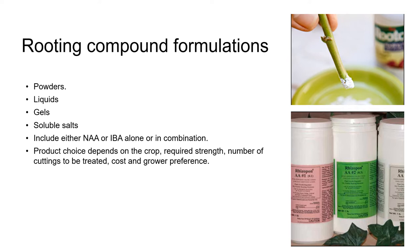In propagation, we have several choices of rooting compound formulation. There are powders, alcohol-based liquids, gels, and soluble salts that are dissolved in water. Depending on the brand, these rooting compounds include either NAA or IBA alone, or both of them in combination. The rooting compound we choose depends on the crop, the required auxin strength, the number of cuttings to be treated, cost, and personal preference.